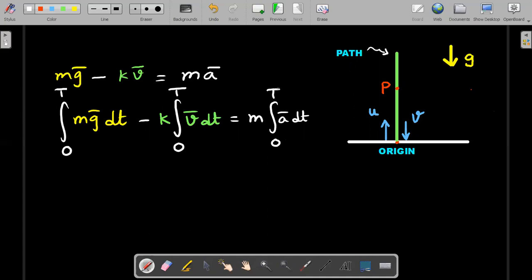Now the easiest of the three is the leftmost one. You could clearly see that this is a constant over the entire period, whether the particle is going up or down. The acceleration due to gravity is a constant vector acting always downward. So this entire thing can come out and this would simply become mg bar into T. So that's your first step.